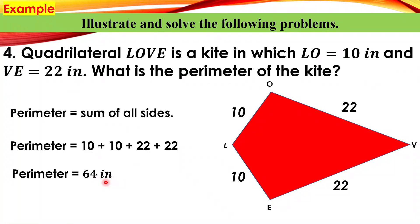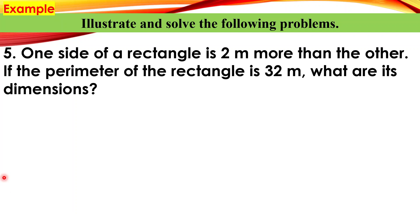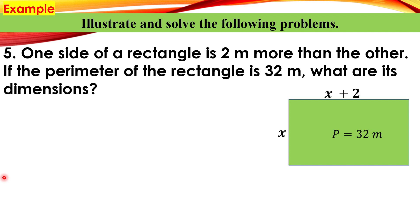Last but not least, example number five: one side of a rectangle is 2 meters more than the other. If the perimeter of the rectangle is 32 meters, what are its dimensions? Let one side be x, then the other side is x plus 2, since it is 2 more than the other. The perimeter is 32 meters.